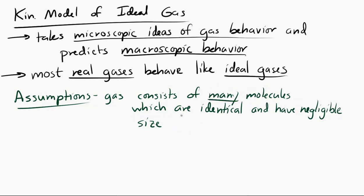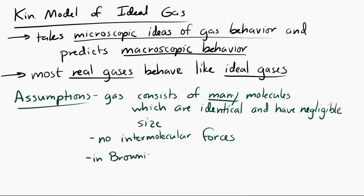We also assume that there are no intermolecular forces in an ideal gas. The molecules move around randomly and do not interact with each other. If we were to look at any single gas molecule, it would be impossible to predict its motion without knowing what every other gas molecule is doing. This kind of motion is called Brownian motion — the random, unpredictable motion of gas molecules from moment to moment.